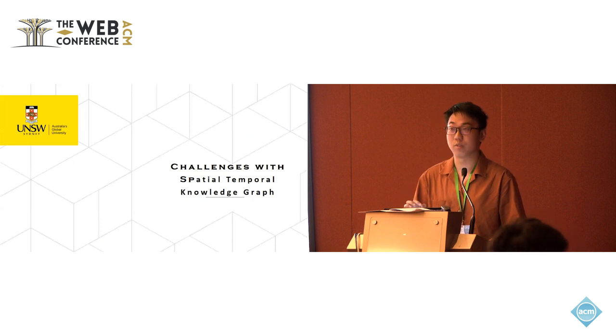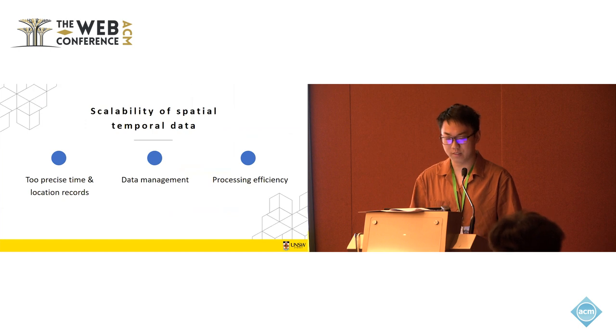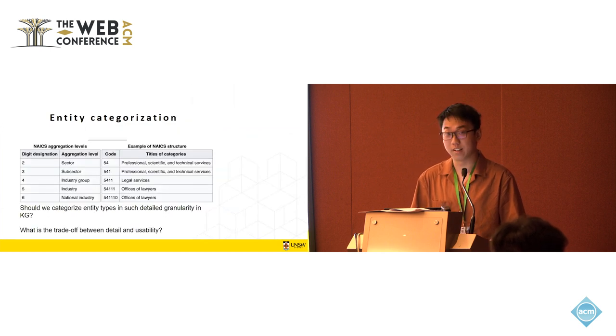But there are actually some challenges with the spatial temporal knowledge graph. The first one is the number of times and locations. In spatial temporal data, time and location are recorded very precisely, which means handling the huge amount of this data poses a major challenge in terms of data management and processing efficiency. The second one is entity categories. To precisely categorize data in some datasets, NAICS code is used, which is six digits. Every digit has different meanings. So should we categorize entity typing such data at what granularity? There's a trade-off between details and usability.